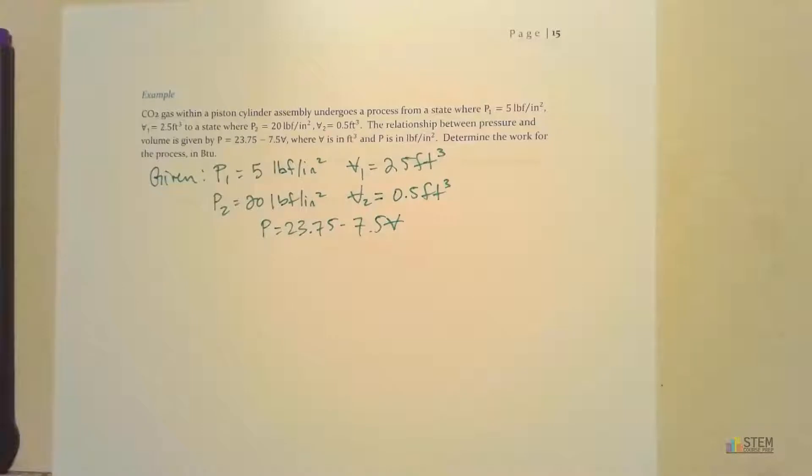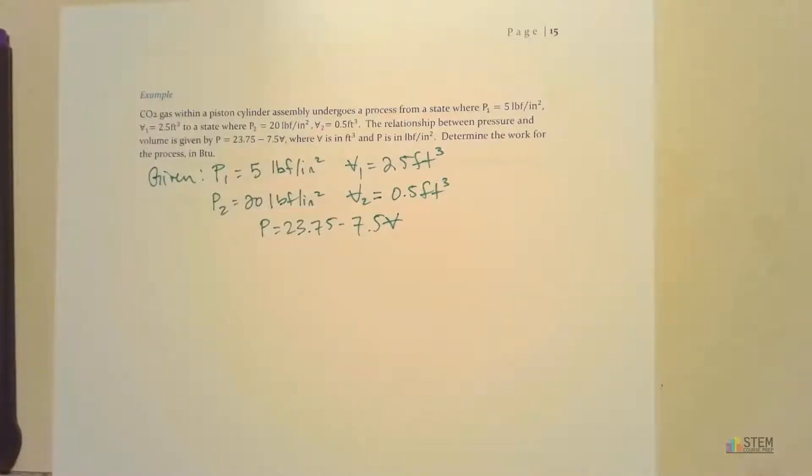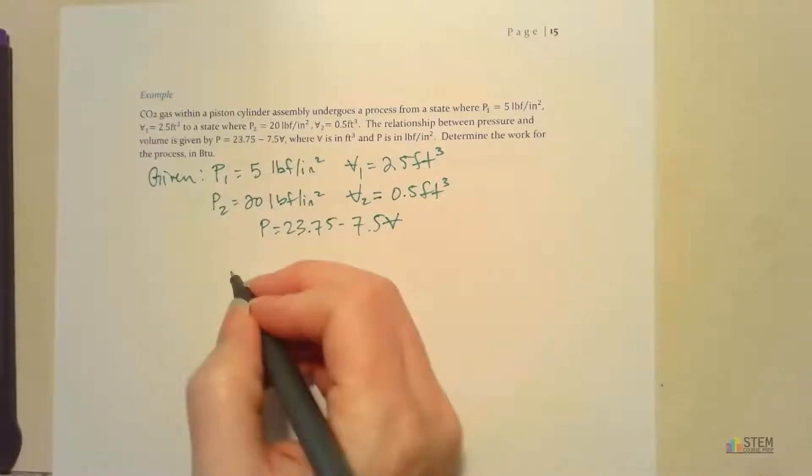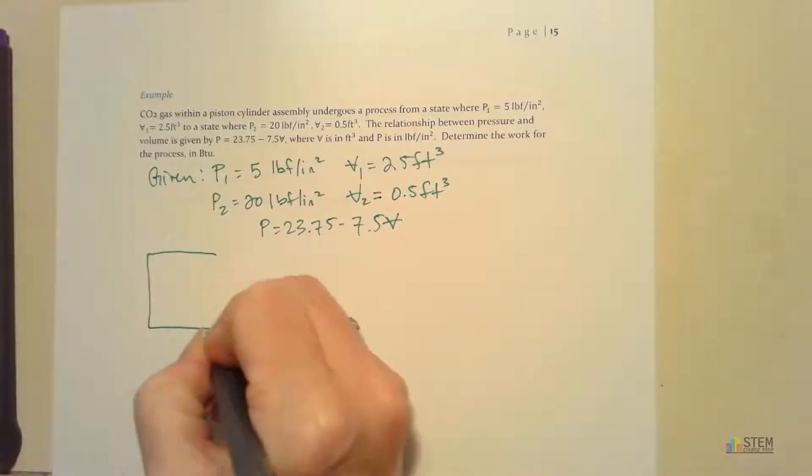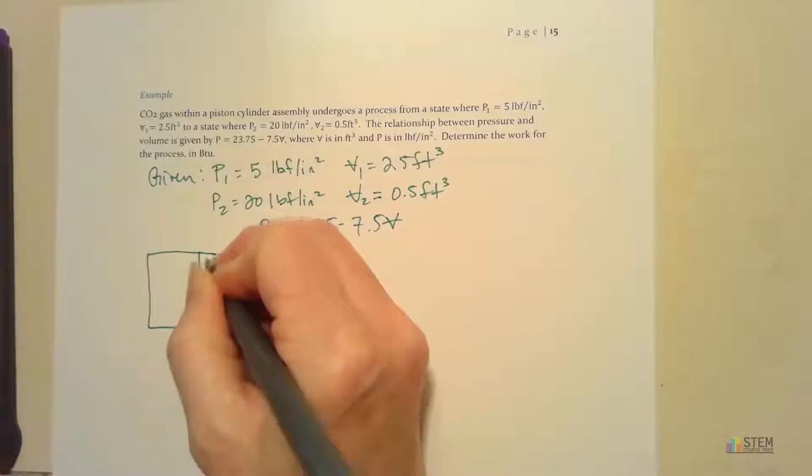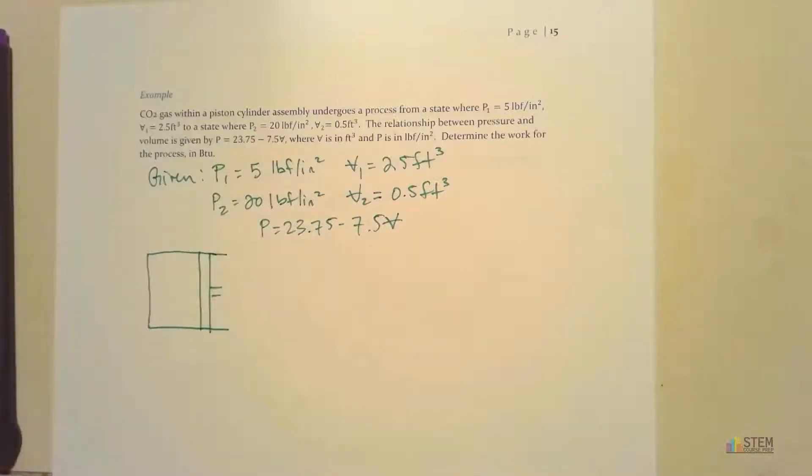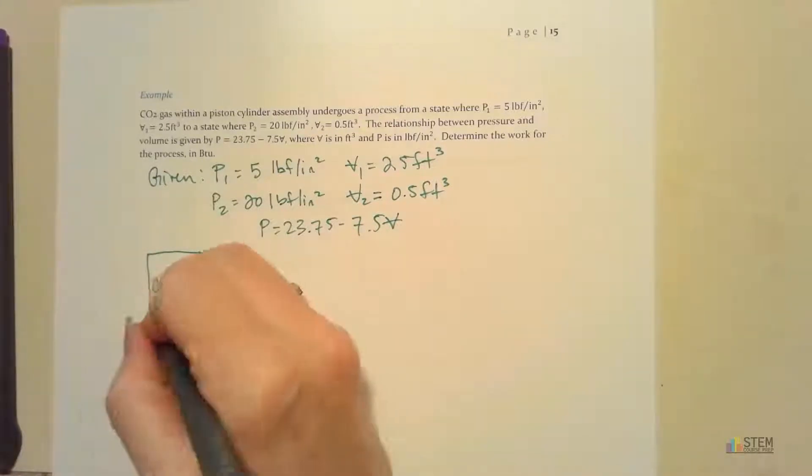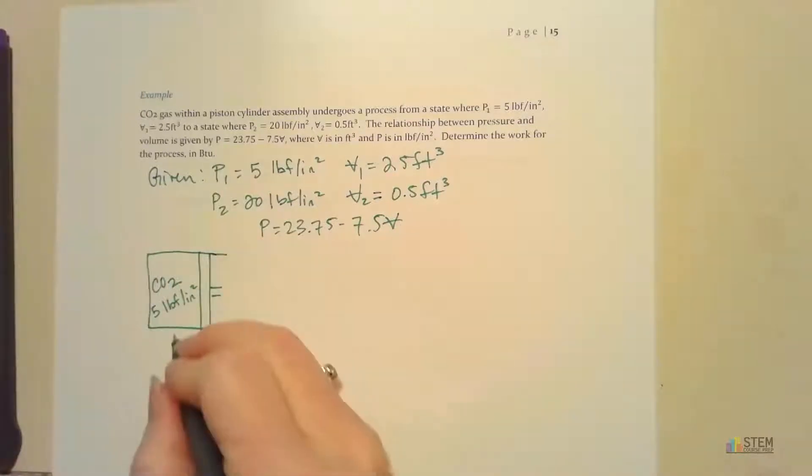Before we start looking at equations, let's draw a picture so we can see what's going on. This is a piston-cylinder assembly with CO2 inside. Initially, my pressure is 5 psi and the volume is 2.5 cubic feet.